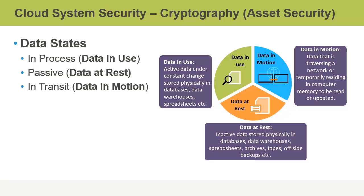Data in use would deal with something like a database where records are constantly being updated, or spreadsheets that people are updating on a constant basis. Data at rest is data that's not active, so it might be stored in a data warehouse or some kind of an archive. Data in motion is data that is traversing a network, or temporarily residing in computer memory.